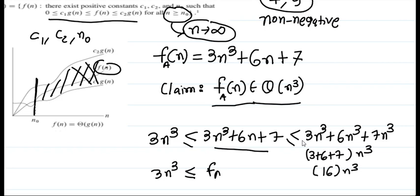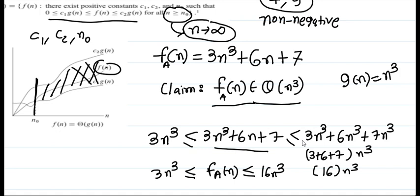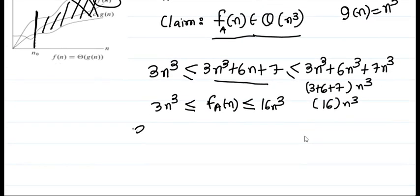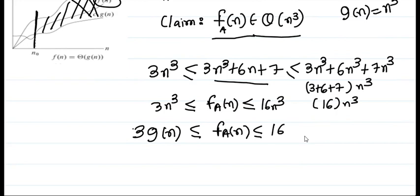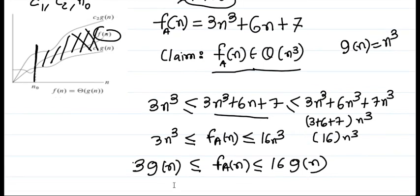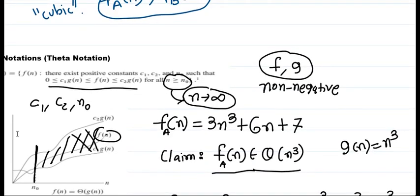So we have established that 3n³ ≤ f_a(n) ≤ 16n³. Since n³ is greater than n for n ≥ 1, we can replace lower-order terms with n³. The function g(n) is n³, and substituting, we confirm f_a(n) is bounded below and above. This satisfies the definition of theta notation.